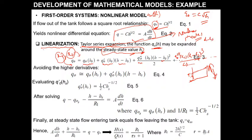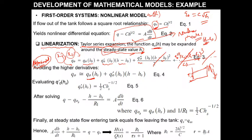Since the deviation (h minus hs) is very, very small, the square, cube, and higher-order terms may be neglected. Therefore, this is an approximated model. Linearization is also known as an approximated model because we have neglected so many higher-order terms. If the steady-state value changes, the response will also change, which is why this is considered an approximated model.